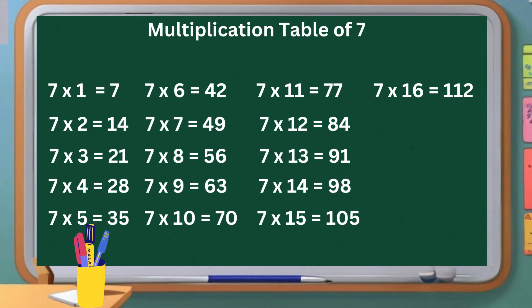Seven sixteenths are one hundred and twelve. Seven seventeenths are one hundred and nineteen. Seven eighteenths are one hundred and twenty-six. Seven nineteenths are one hundred and thirty-three. Seven twenties are one hundred and forty.